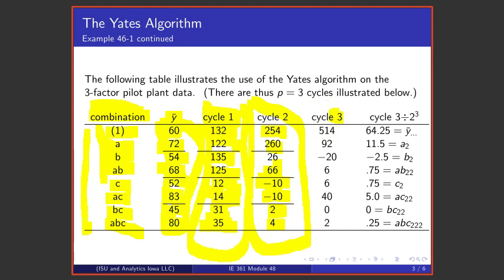I make a number of cycles equal to the number of factors. So if I'm doing analysis of a 2 to the 3 factorial, if I have three factors, then I need to make three cycles. And so here is the third cycle of the Yates additions and subtractions. And now I'm going to divide the results in this column by 2 to the P. So for this particular example, we have three factors. So I'm going to divide by 8. 514 divided by 8 is 64.25, 92 divided by 8 is 11.5, and so on.